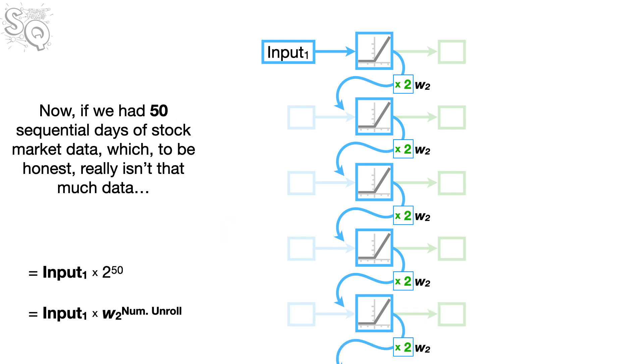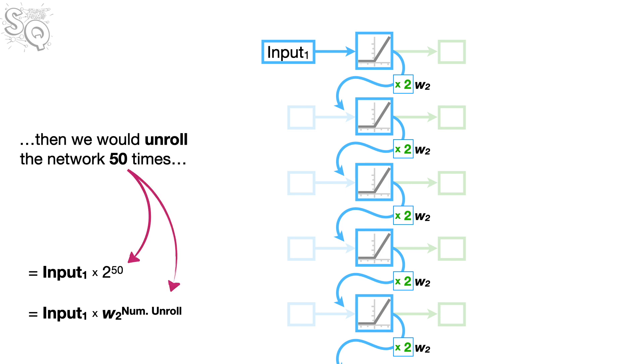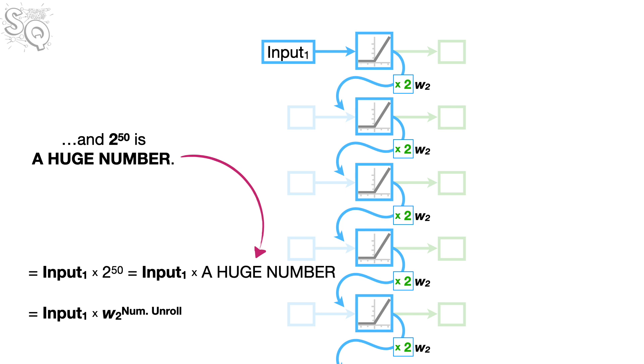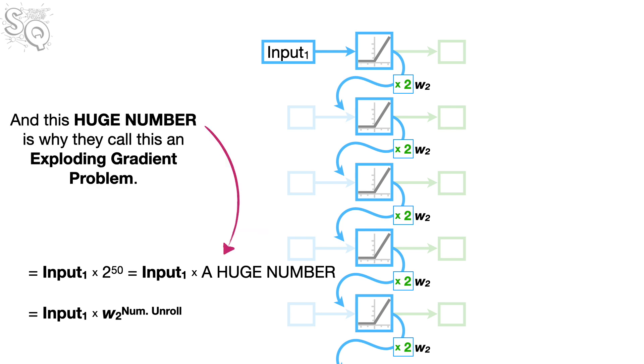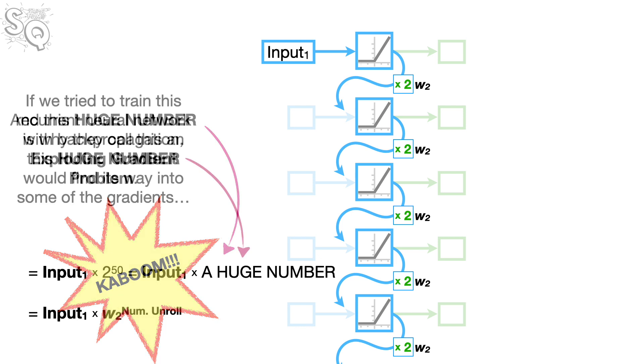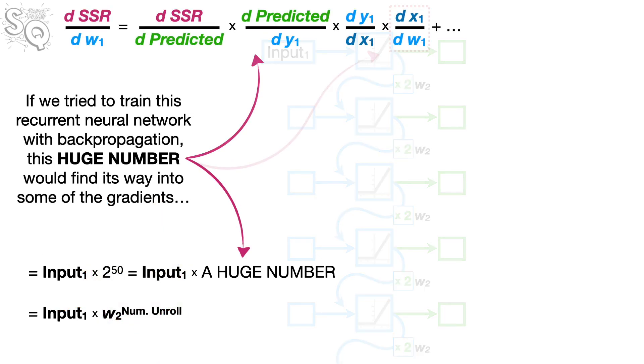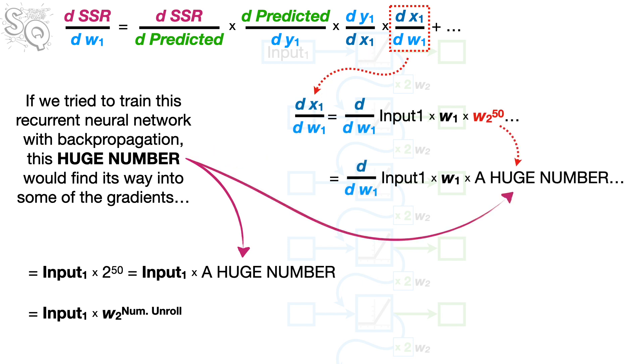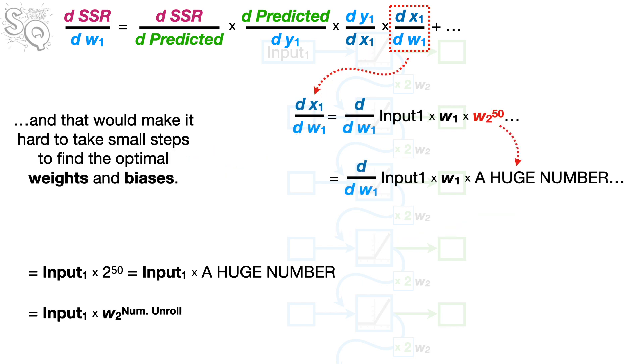Now, if we had 50 sequential days of stock market data, which, to be honest, really isn't that much data, then we would unroll the network 50 times. And 2, raised to the 50 power, is a huge number. And this huge number is why they call this an exploding gradient problem. Kaboom! If we tried to train this recurrent neural network with backpropagation, this huge number would find its way into some of the gradients. And that would make it hard to take small steps to find the optimal weights and biases.